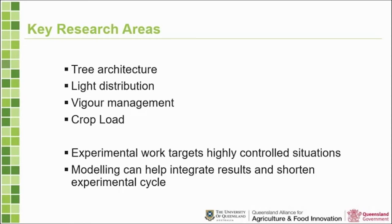Vigor is about how much vegetative versus reproductive growth you have. You saw in those apple examples that there wasn't much vegetative growth in the modern systems, but we want to do the same with something that can be a huge tree — like a mango in the wild. And of course crop load: we need to understand the trade-off between the number of leaves and the fruit we can grow on a tree.